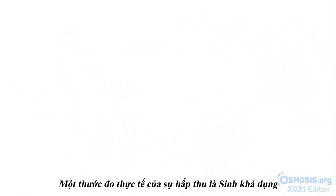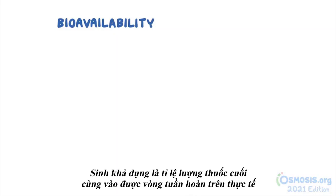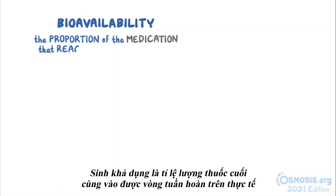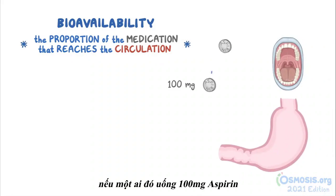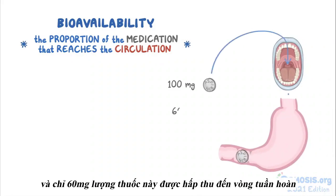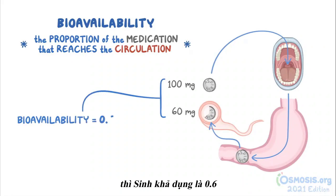A practical measure of absorption is bioavailability — the proportion of the medication that eventually reaches the circulation. For example, if someone takes 100 mg of aspirin orally and only 60 mg is absorbed into the circulation, the bioavailability is 0.6, or 60%.